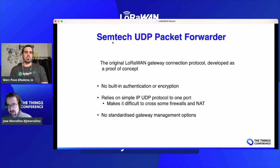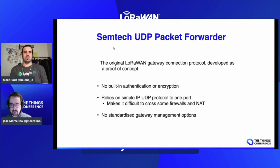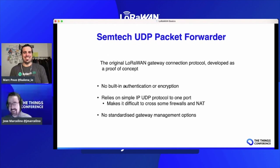For this part where the gateway connects to the network server, there are two main protocols. Traditionally gateways have been using something called the Semtech UDP packet forwarder. This is the very first protocol developed — it was designed as a proof of concept, not for production at all — but then it kind of became too complicated, took off, and became the standard, much to the regret of its developer.